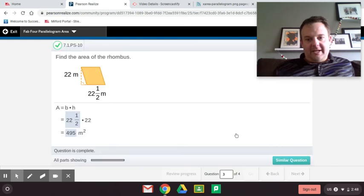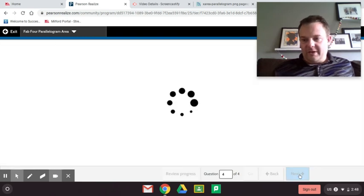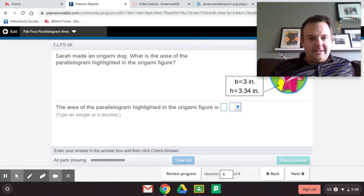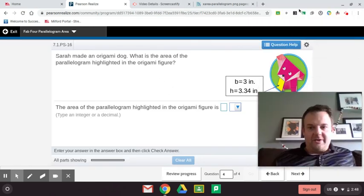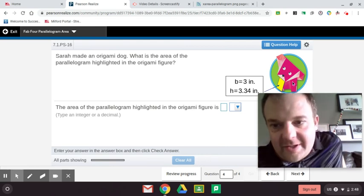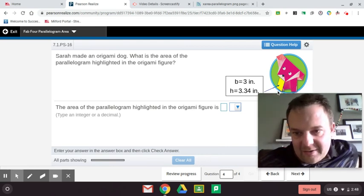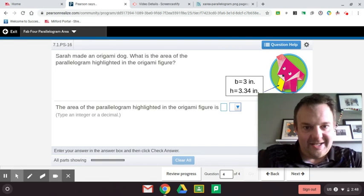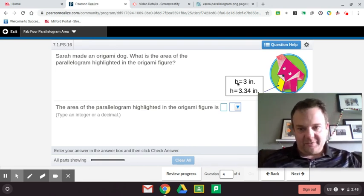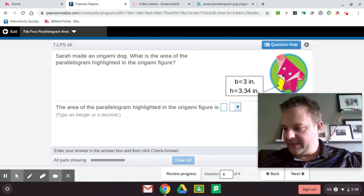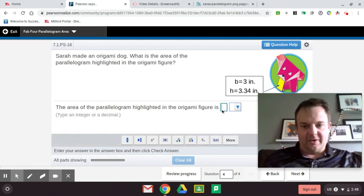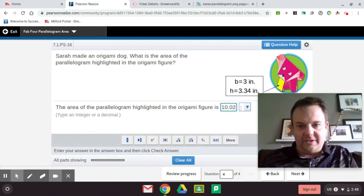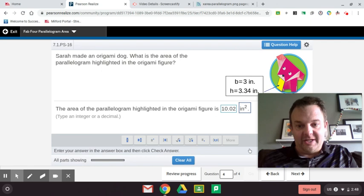And we got it. We have one more. Here we go. Sarah made an origami dog. Let's take a look at this origami dog here. Oh, it's so cute. Look at that origami dog, and there's a parallelogram right here on the leg. What is the area of the parallelogram highlighted in the origami figure? So we would do base times height, and we'll just plug that in. 3 times 3.34 equals 10 and 2 hundredths. So that would be 10 and 2 hundredths inches squared.